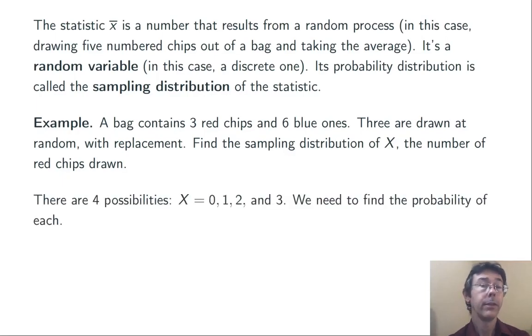So, here there are four possibilities for x, 0, 1, 2, or 3, the number of red chips we draw in three tries. By the way, notice that x is a statistic. We are doing a sample, and then x is going to be a number describing that sample, the number of red chips we draw.